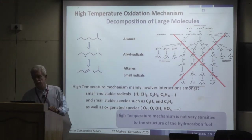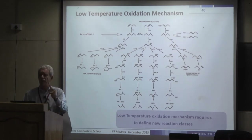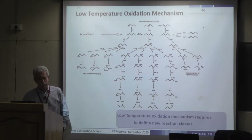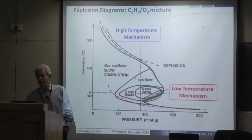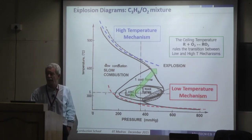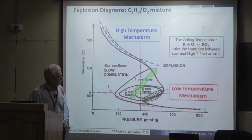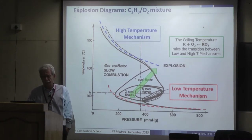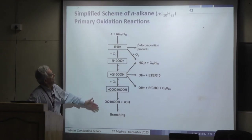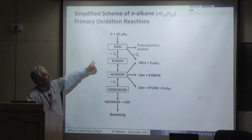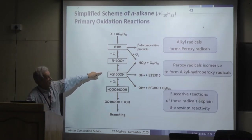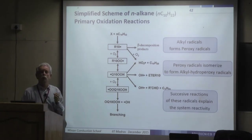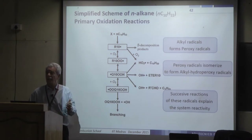The new low temperature reaction classes — following the work of Charlie Westbrook and coworkers — include: alkyl radical addition to oxygen, alkylperoxy radical isomerization, alkyl radical decomposition, and further addition reactions. Reference kinetic parameters are available for these classes, and automatic generation of all reactions is again possible.